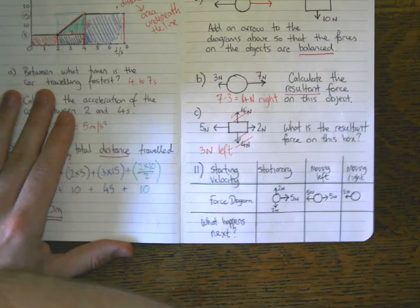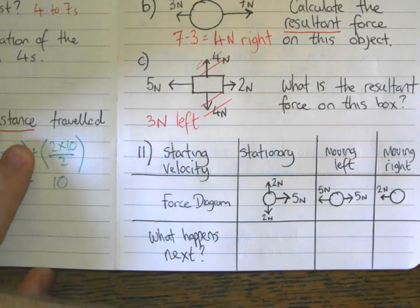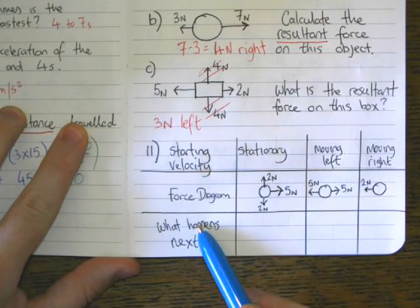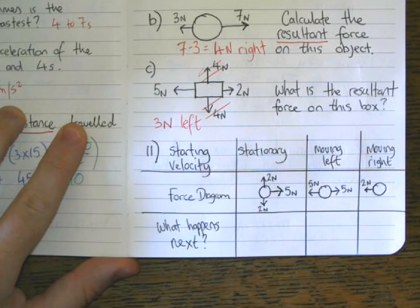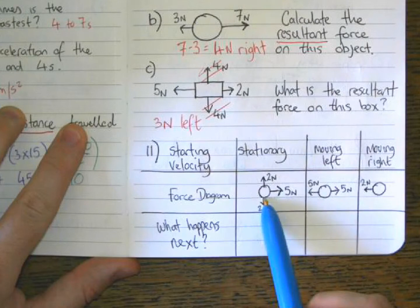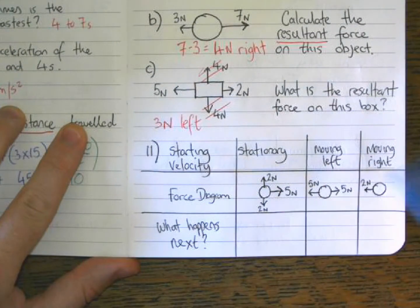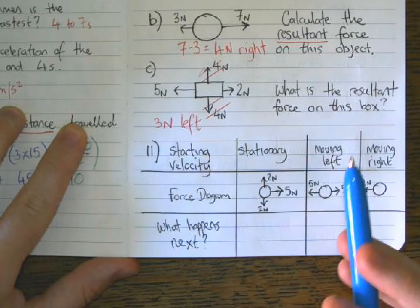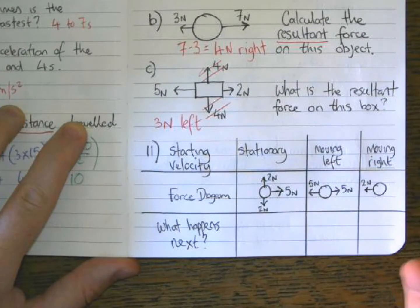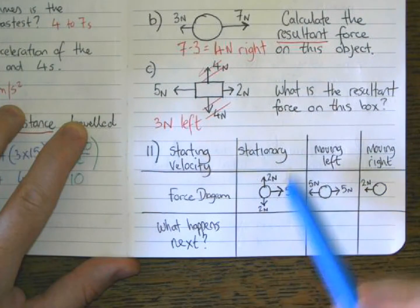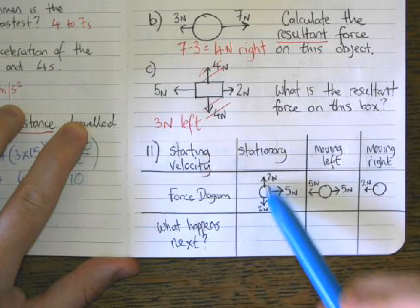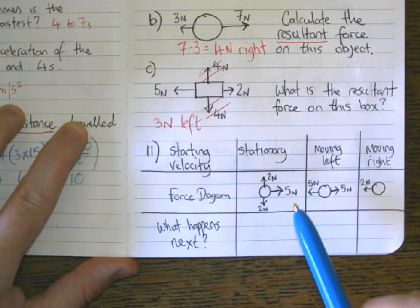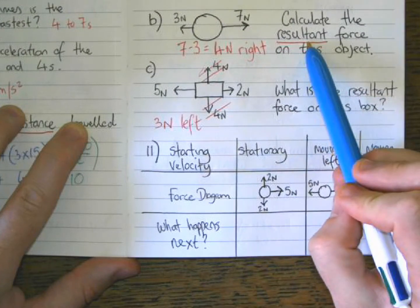Next we have a table. We're asked: given the force diagram, what's going to happen next to the object — as if a pause button had been pressed? In this first example, the starting velocity of the object is stationary. We look at the forces: two Newtons up, two Newtons down — they're balanced, so no change of speed upwards or downwards. But there is five Newtons acting to the right, which means there's going to be a resultant force to the right.